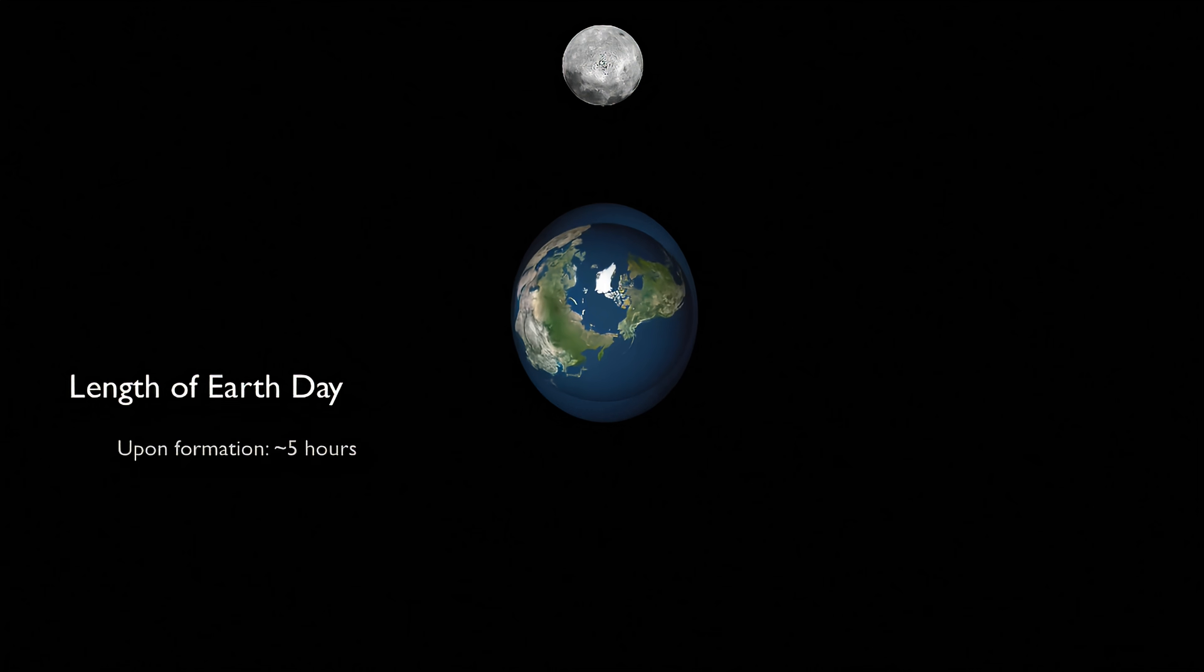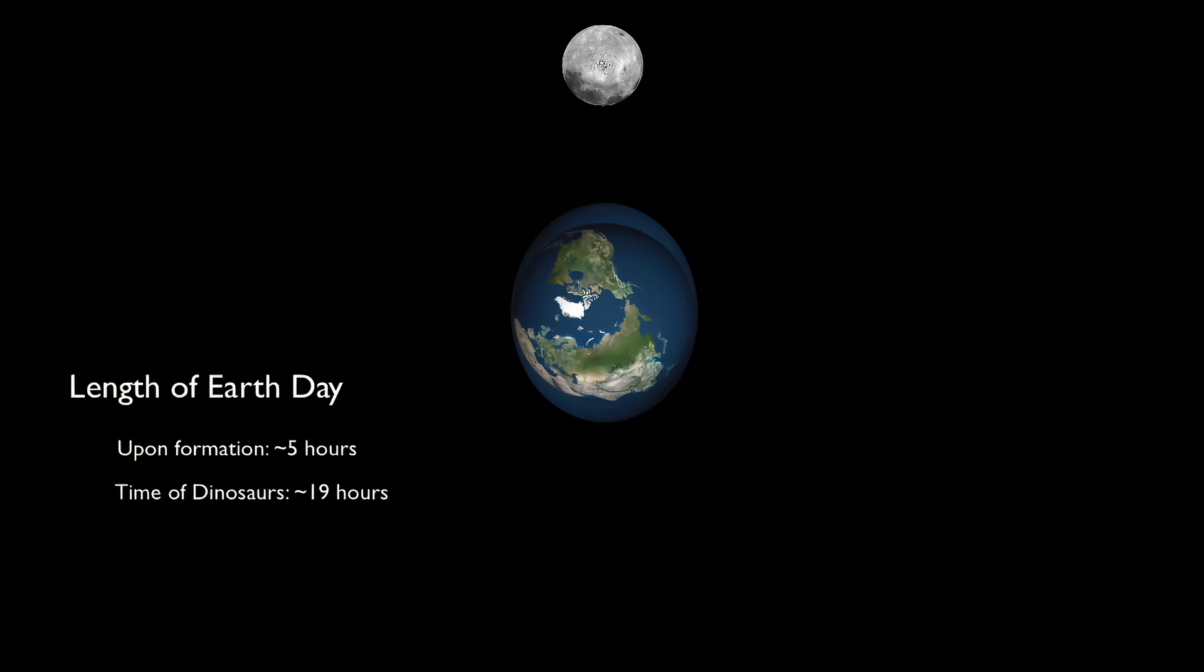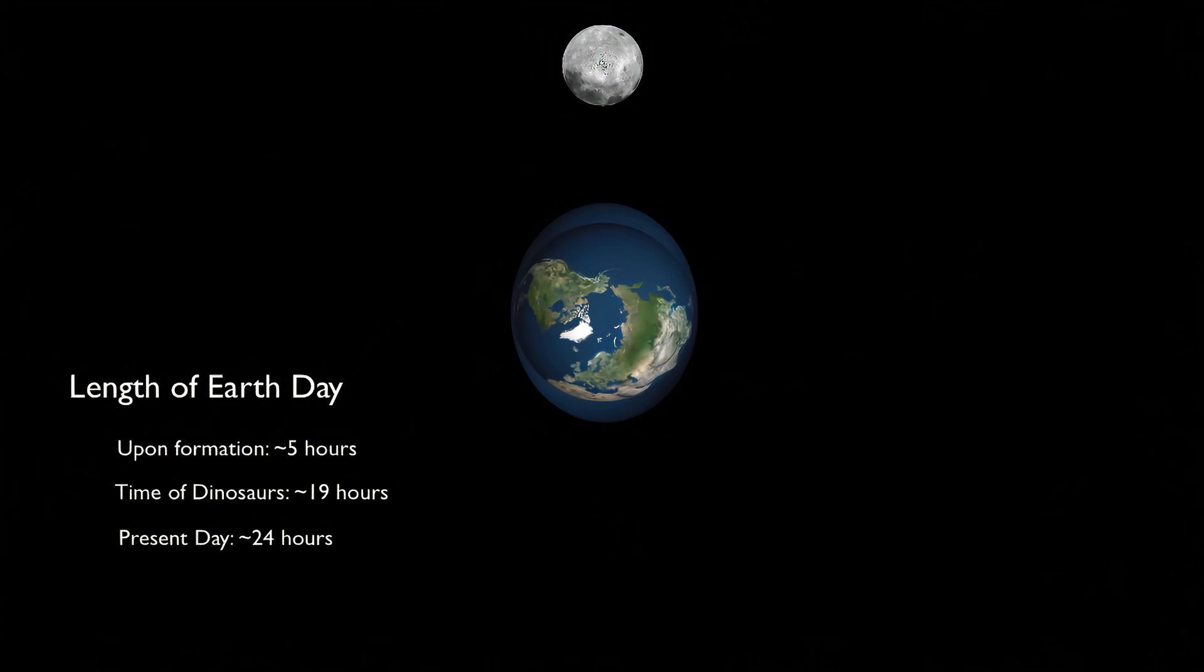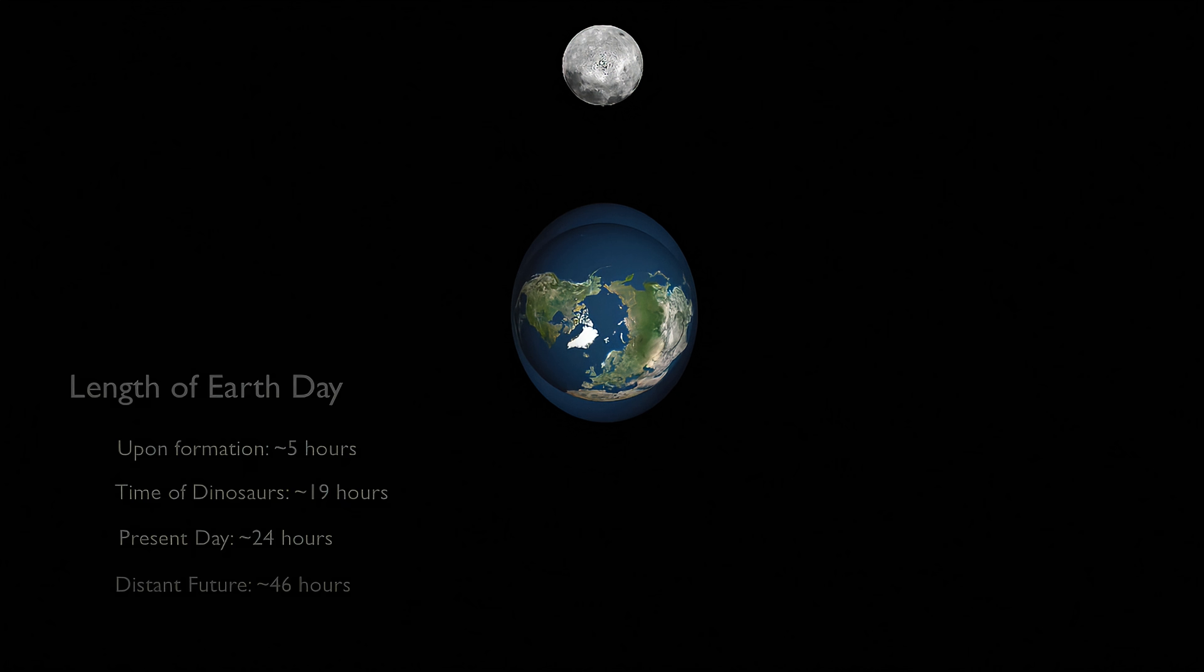As I said earlier, back in the time of the dinosaurs, a day was about 19 hours long. In a billion years or so, a day will slow down to about 46 hours. At that point, only one face of the Earth will face the moon, much like only one face of the moon now faces the Earth.